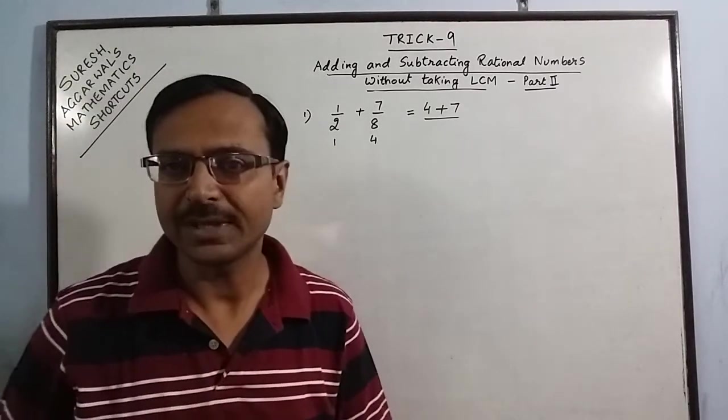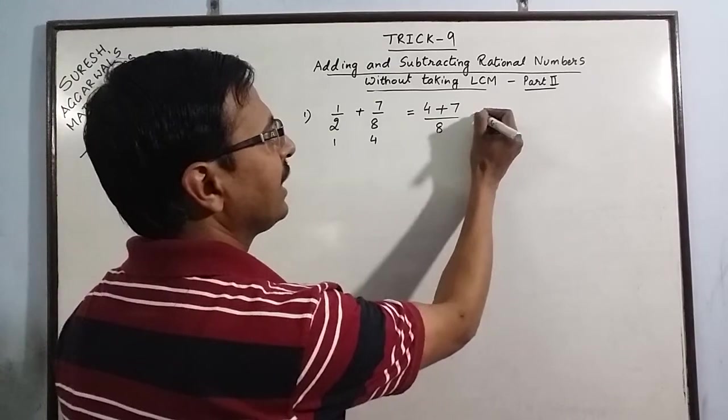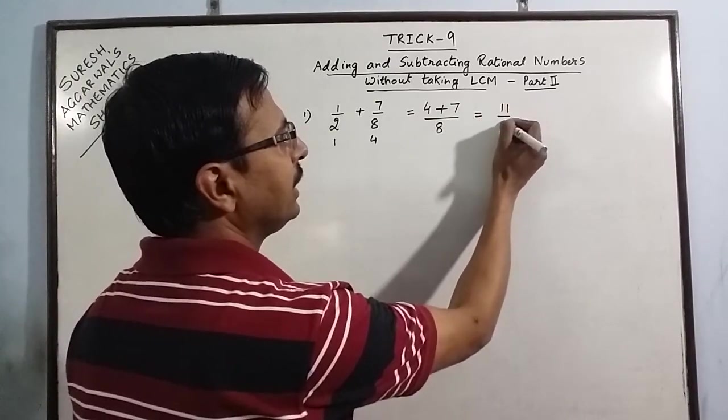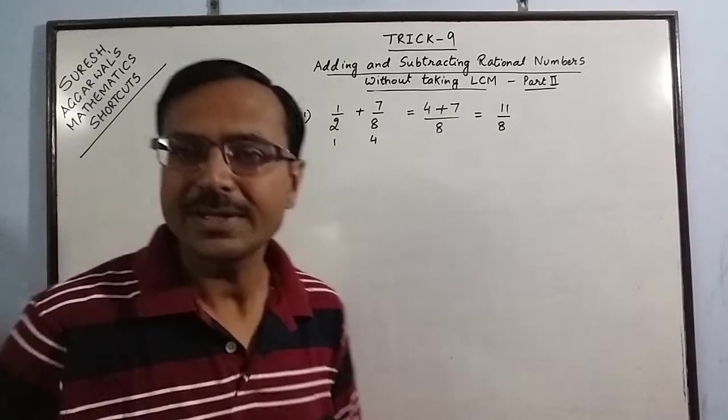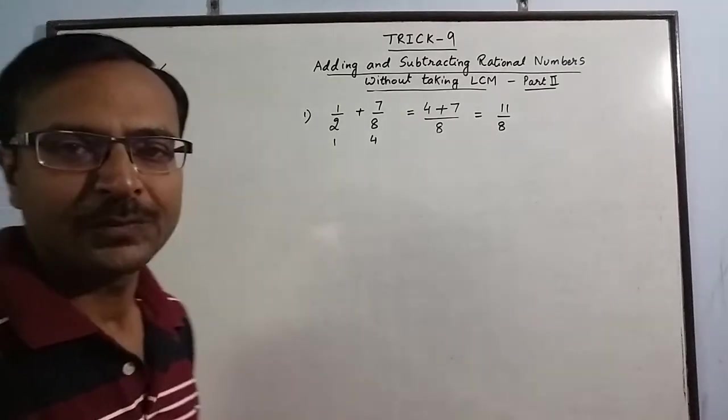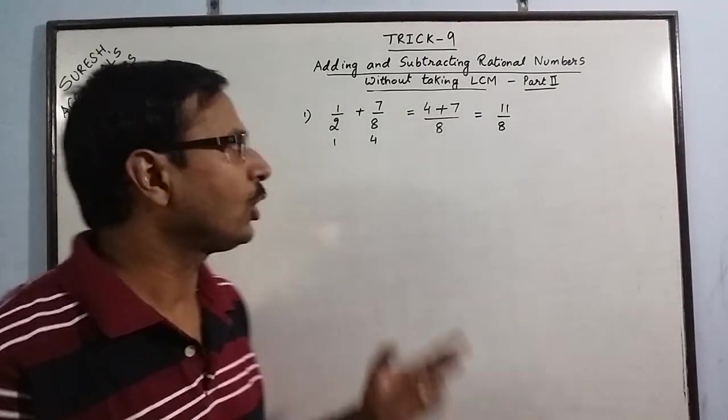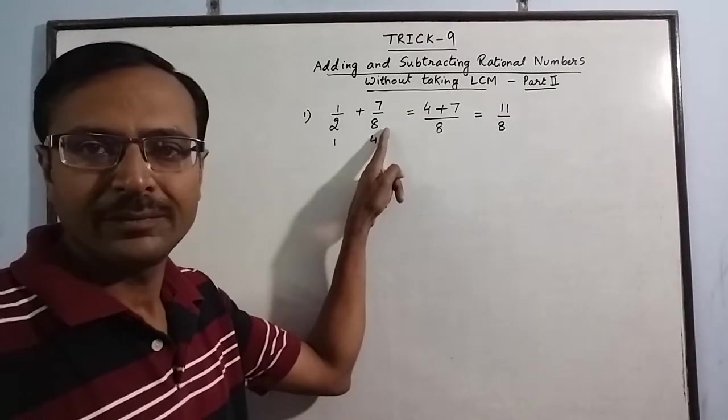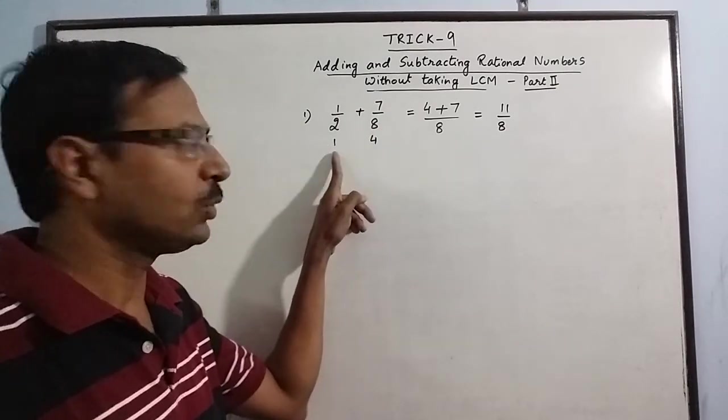The product is the same in both cases, that is 8. So the final answer is 11 upon 8. Please notice here that we have not taken LCM, we have just cancelled out the common factor between 2 and 8 and converted them into lowest form.